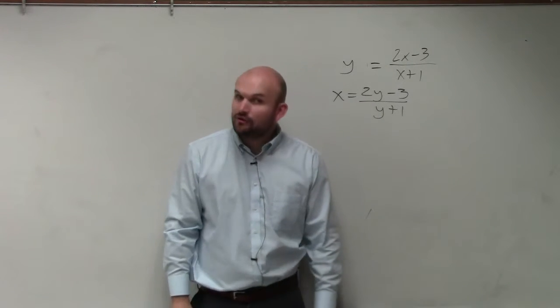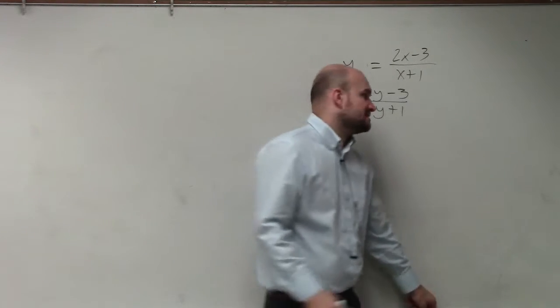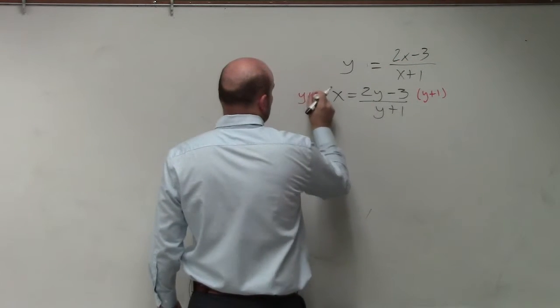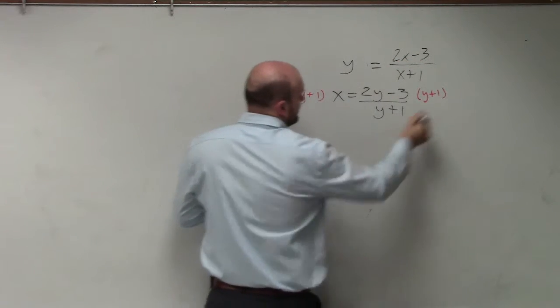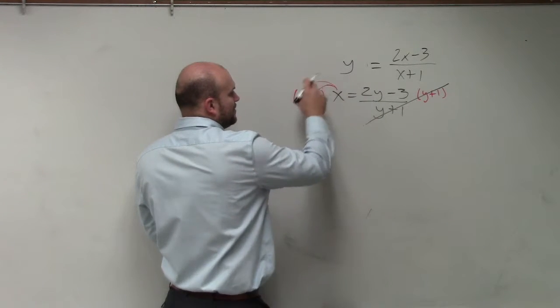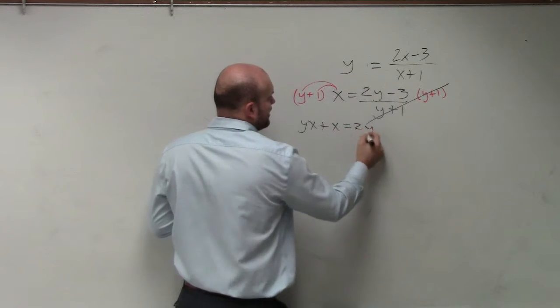Now, all we need to do is solve for y. We cannot solve for a variable in the denominator. So we get the variable off the denominator by multiplying by the denominator on both sides. Therefore, that divides the 1. We have to apply the distributive property here. So we get yx plus x equals 2y minus 3.